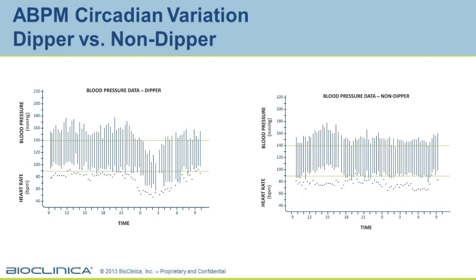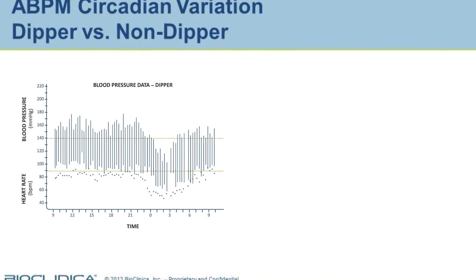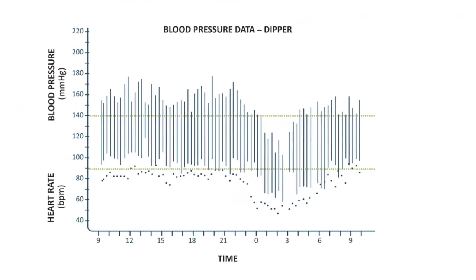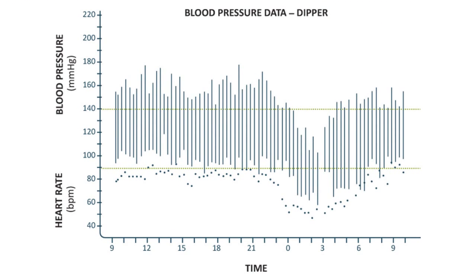Let's focus on the graphic display on the left-hand side of your screen. What you can see here is that 24-hour circadian profile. The x-axis is the time of day, the y-axis is the blood pressure in millimeters of mercury. Each individual line represents a blood pressure reading, with the top of the line being the systolic pressure and the bottom of the line being the diastolic, and the points beneath each line being the heart rate at that blood pressure reading.